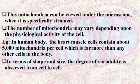Mitochondria can be viewed under the microscope only when specifically stained. The number of mitochondria may vary depending upon the physiological activity of the cell. For example, in the human body, the heart muscle cells contain about 5000 mitochondria per cell, which is far more than any other cell in the body.